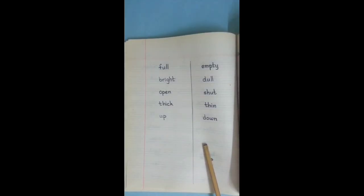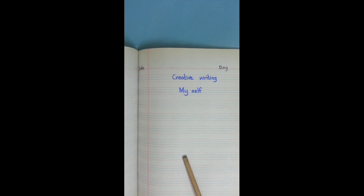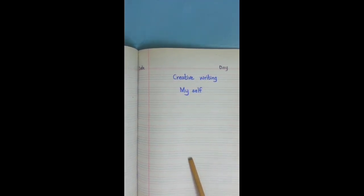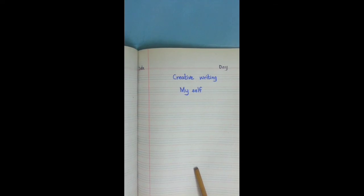Do neat and clean handwriting. On the next page, first you put the date and day. Write the caption: Creative writing, myself. You write a few lines on myself, about yourself, just as we read from our book. Write some sentences here. Do neat and clean handwriting. Put the finger space and touch the lines properly. Now, completed. Allah Hafiz.